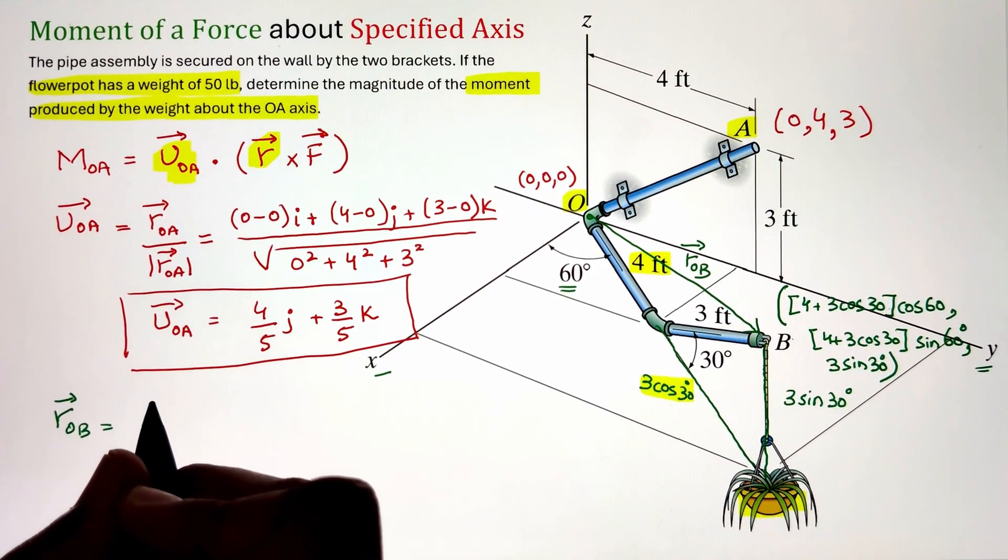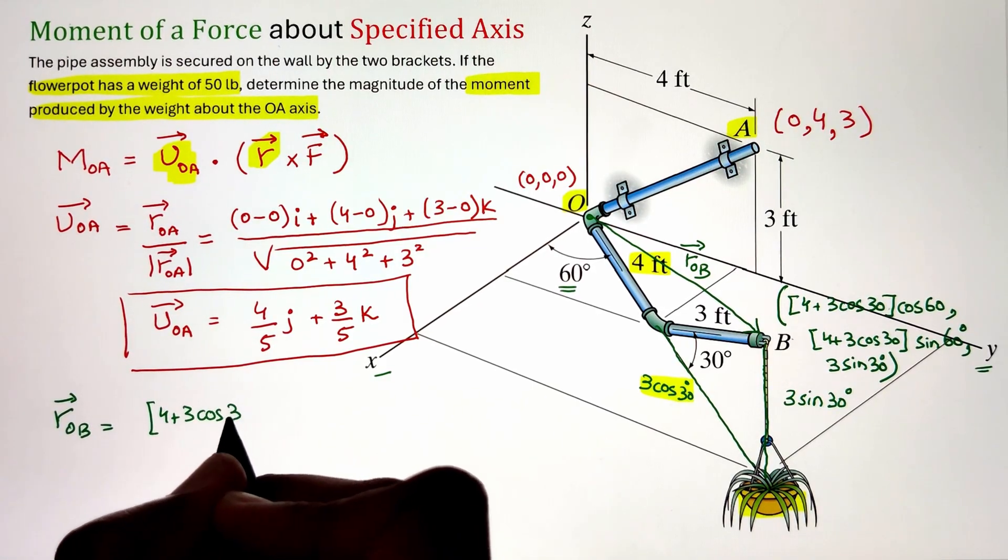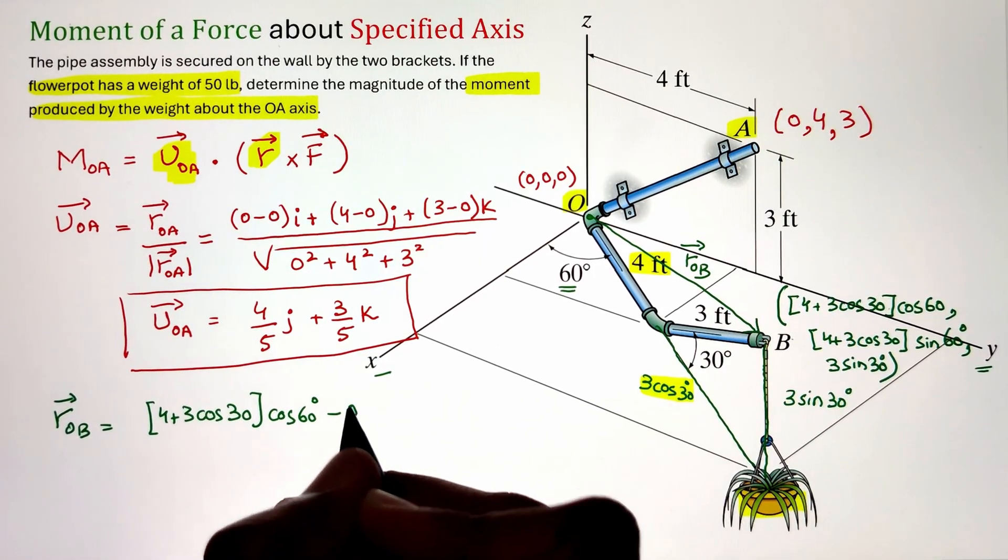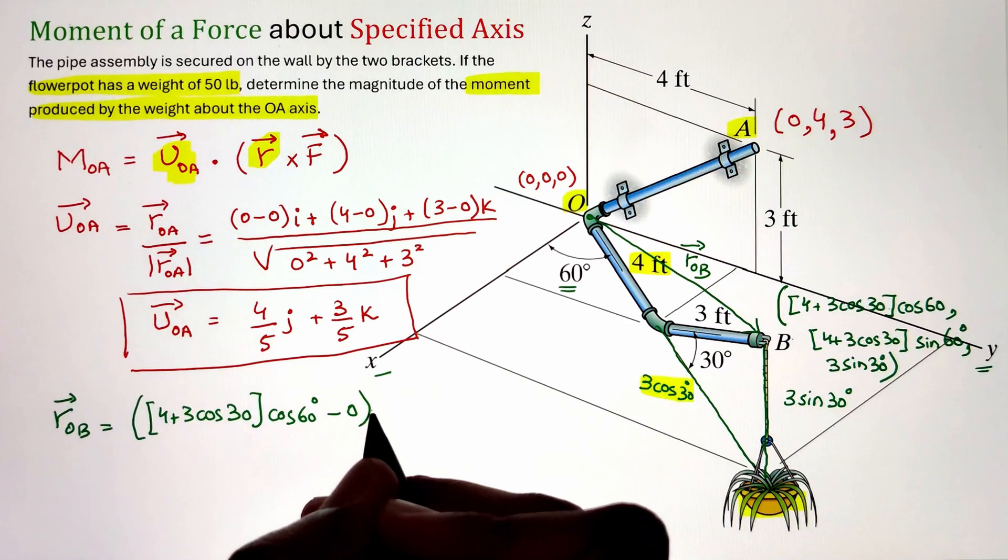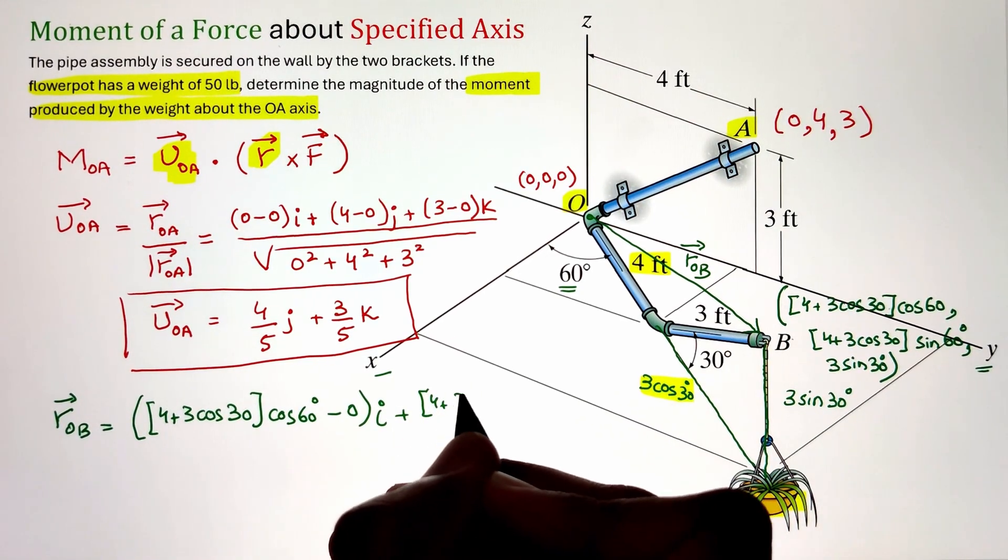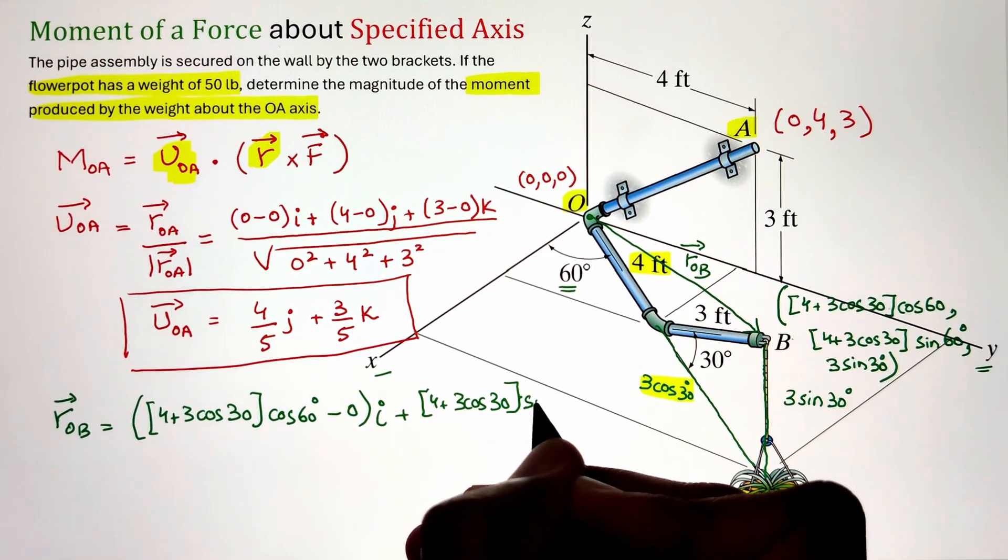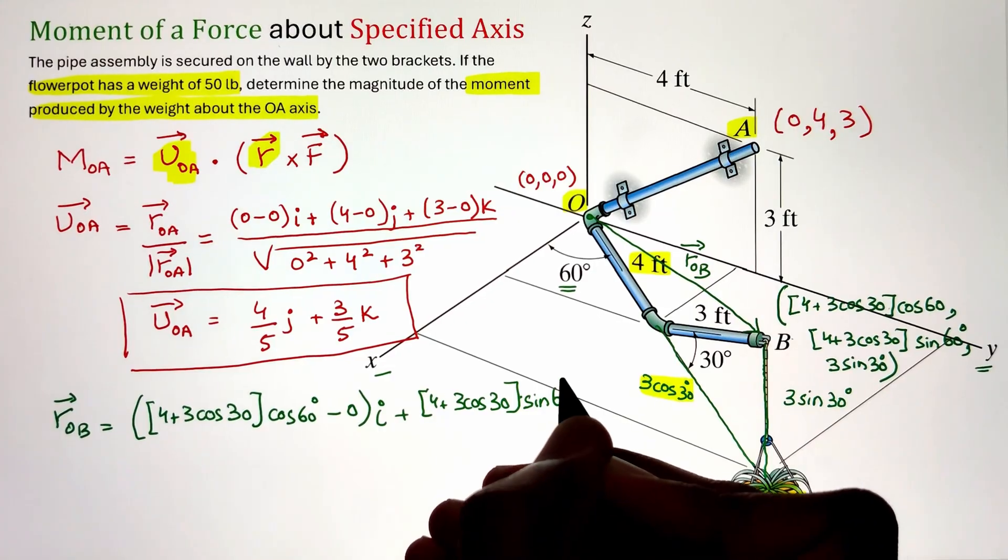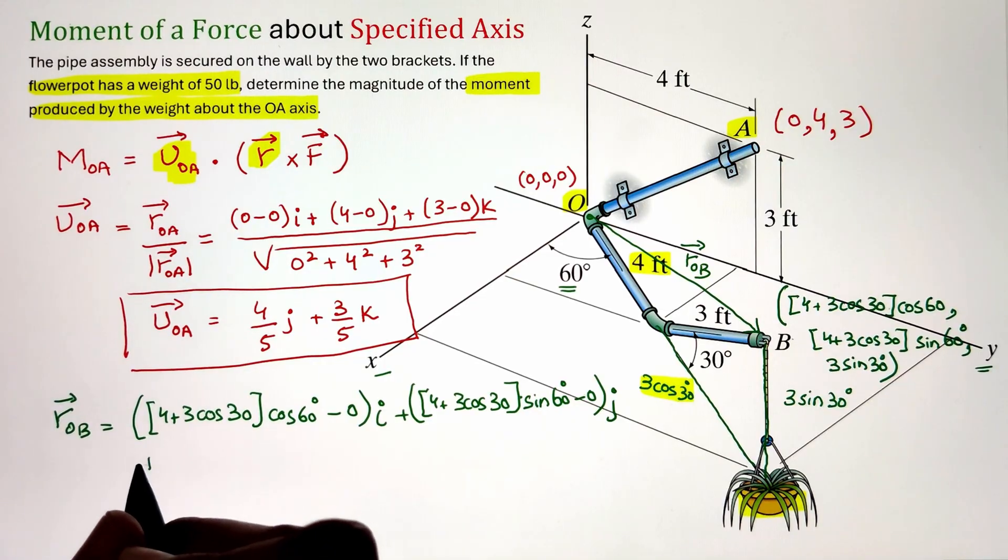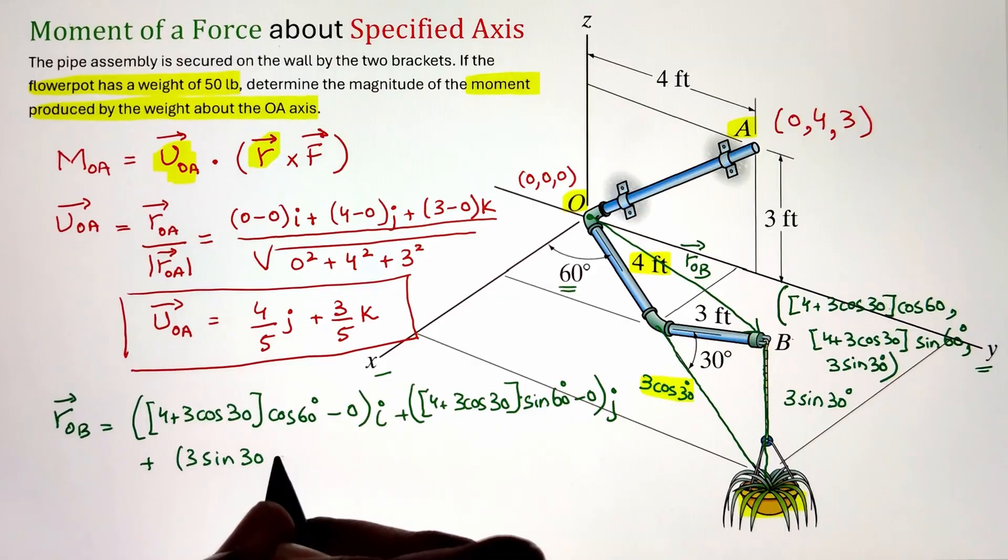Now once we have the point coordinates of B we can write our moment arm, that is the position vector from A to B. That is any point on the axis across which we are calculating the moment. That's why we are picking point A and the head lies on the line of action of the force. That's why we are picking point B. Now doing the head minus tail we can calculate our position vector rAB that is 3.29I plus 5.71J plus 1.5K. Now this position vector is the moment arm.